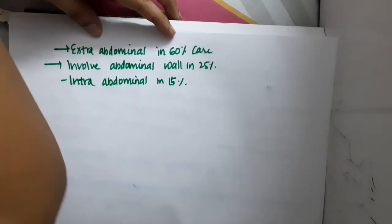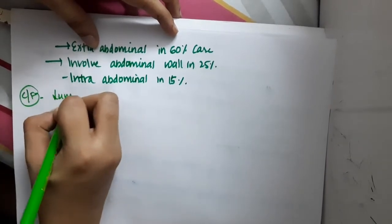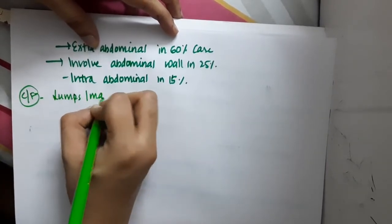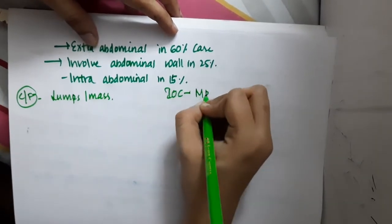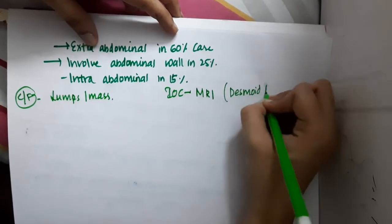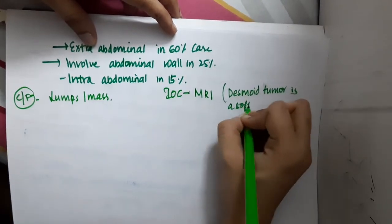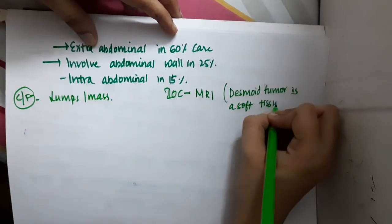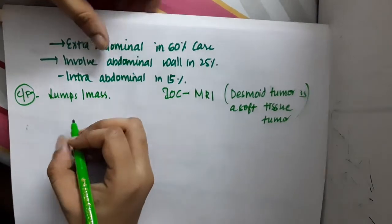Now what are the clinical features? You will see the presence of lumps or mass. What about the investigation of choice? Investigation of choice is MRI because the Desmoid tumor is a soft tissue tumor. You cannot see it in CT or chest x-ray, so MRI is the investigation of choice.